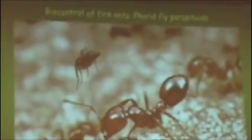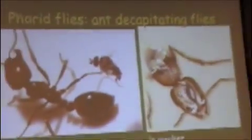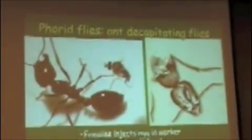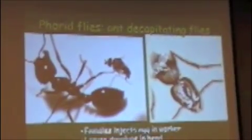Natural enemies that you may have heard about are these phorid flies, these parasitoids. There's a fly here getting ready to attack a fire ant. What the fly does is it injects an egg into the body of the fire ant.